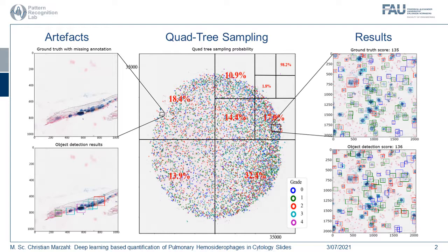This quadri-based approach is our sampling strategy, where we take into account that grade 4 cells are very rare. On this slide, there is just one grade 4 cell. So for our sampling strategy, we take the local neighborhood into account.